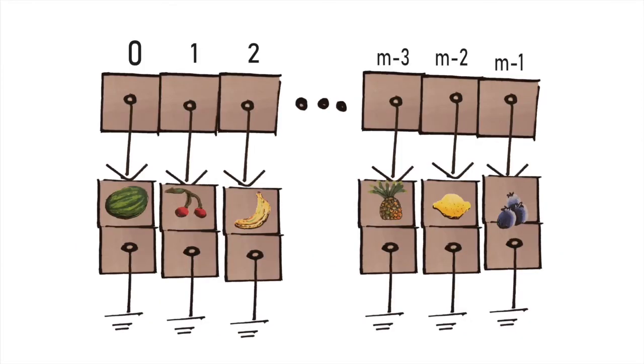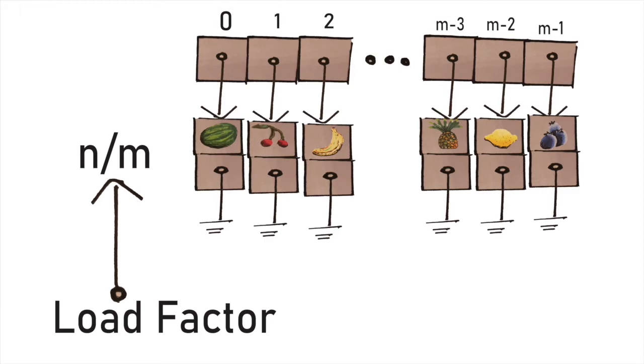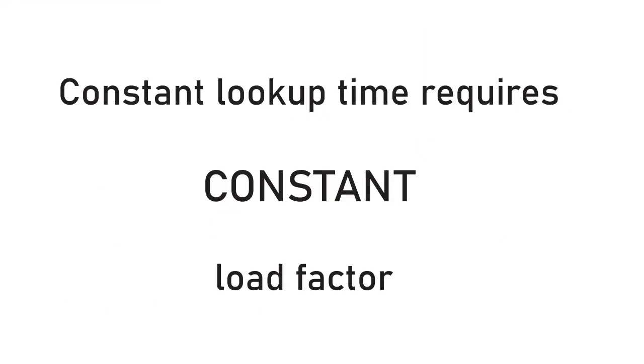We can only maintain our fast lookup time by resizing our array when the table gets too crowded. When the ratio of fruit to table slots, n over m, becomes too large. This is called the load factor. If you want constant lookup time on your hash table, you need to maintain a constant load factor.